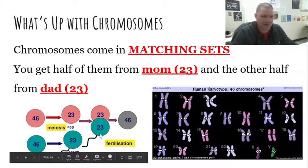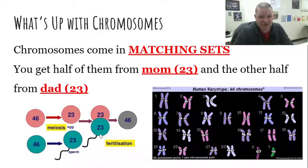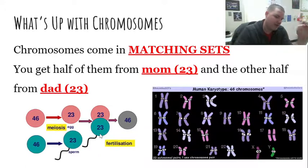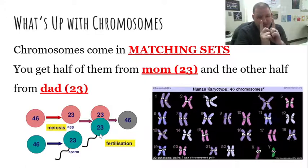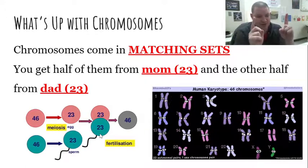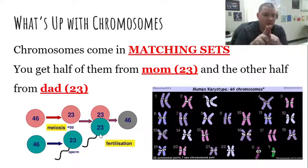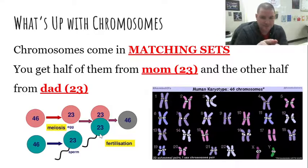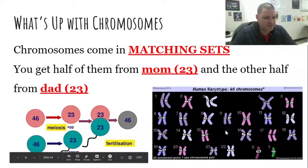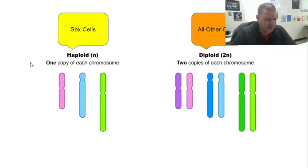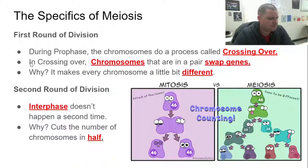Chromosomes come in matching sets, because you have a mom set that matches up with the dad set. You get half of your chromosomes from mom and half from dad — that means 23 of each for humans. When those two combine together to form the baby, that is where you get your full set of 46. They come in little matching pairs — that's why they are in the little X shapes. You can see all the little dancing pairs in the picture.